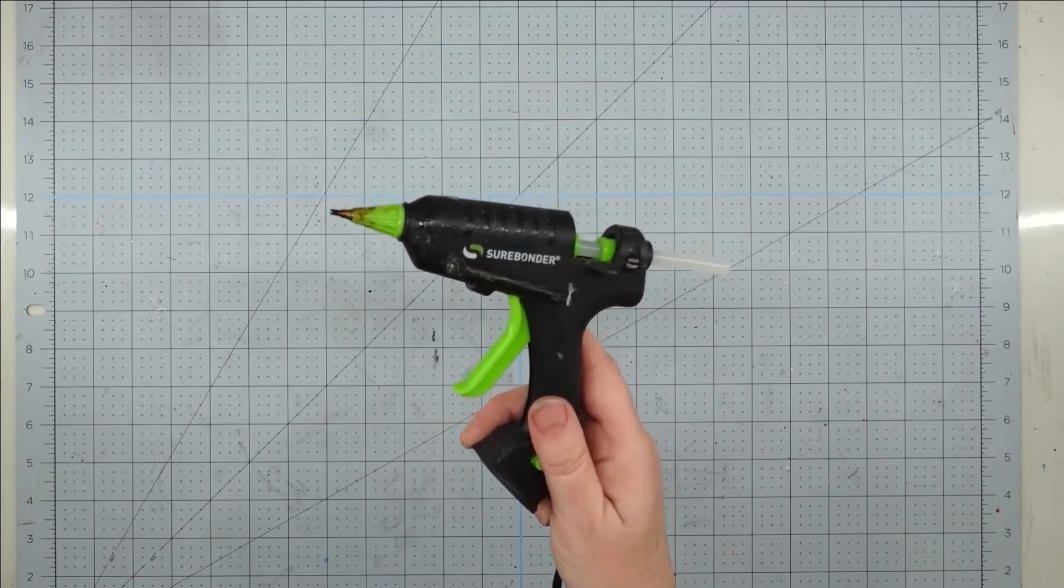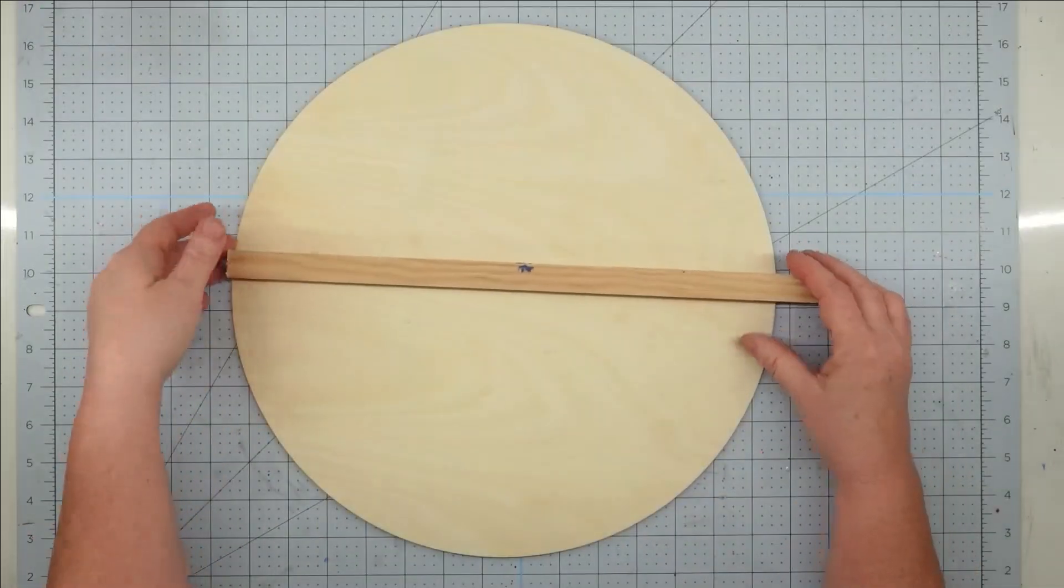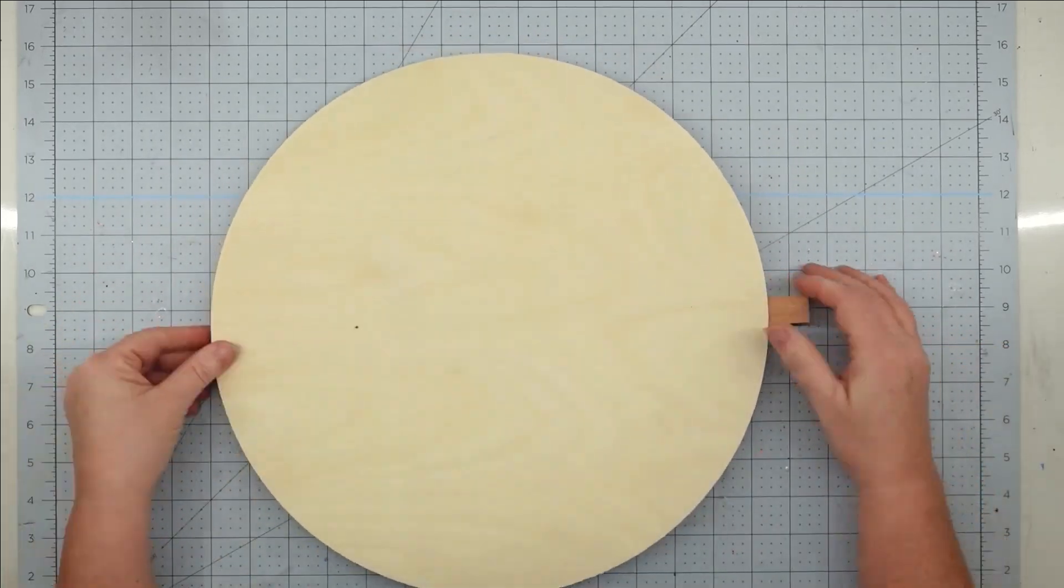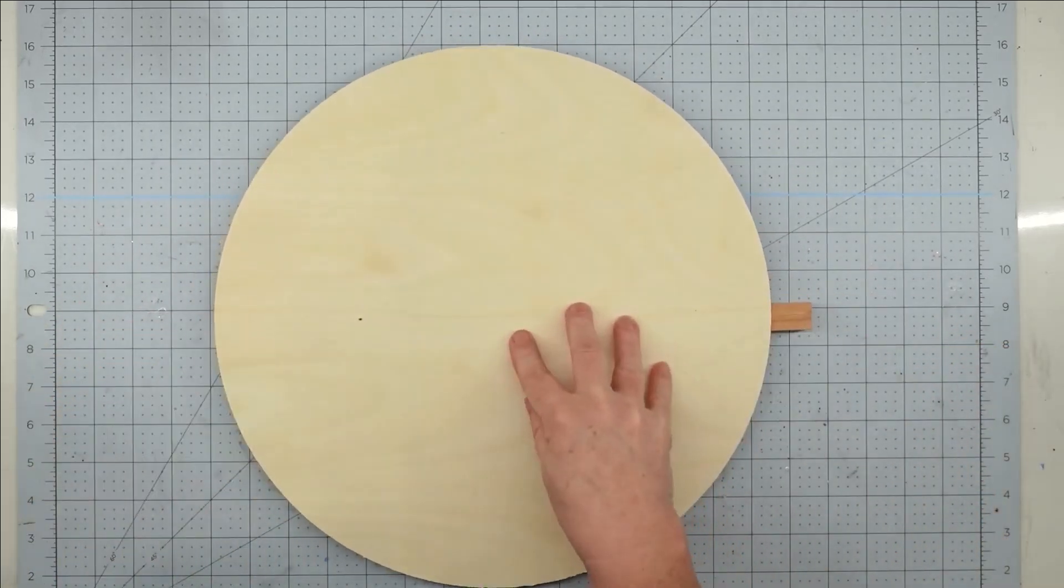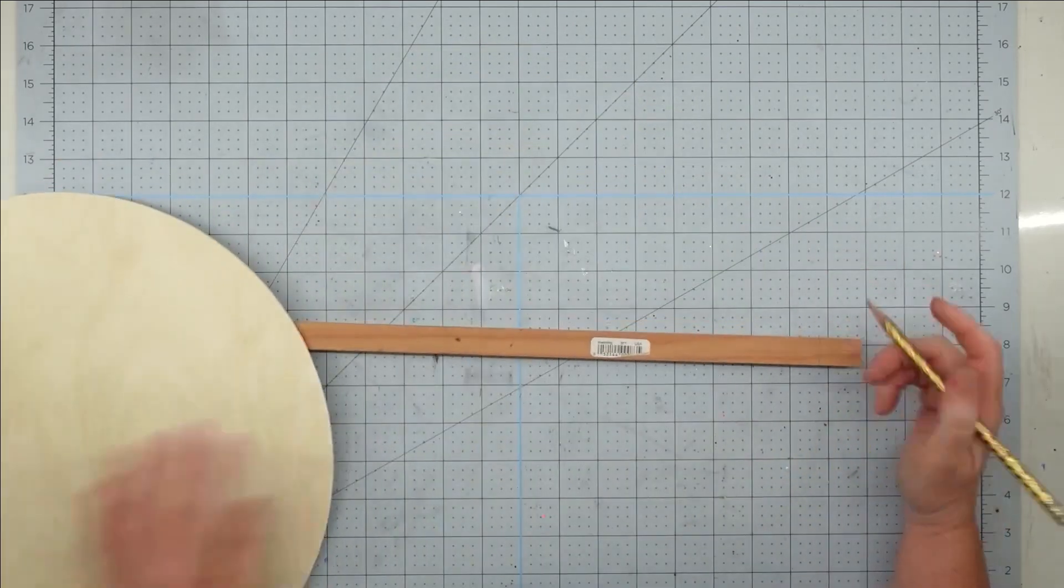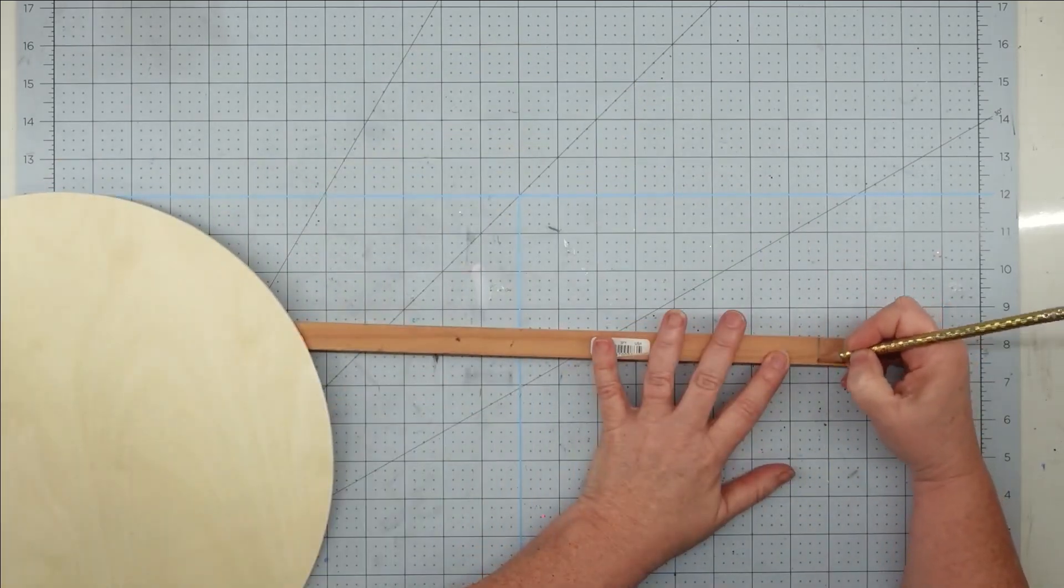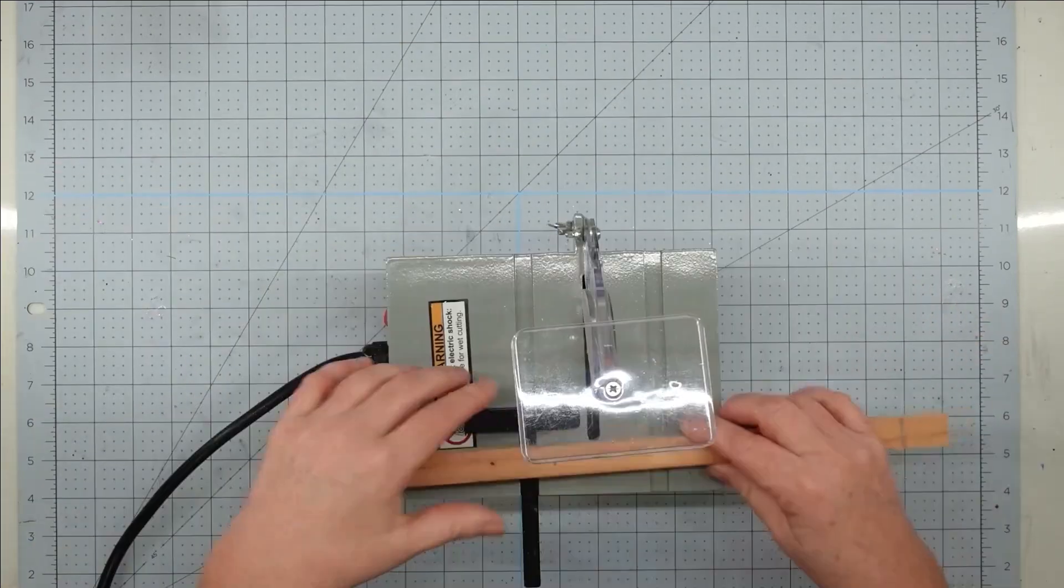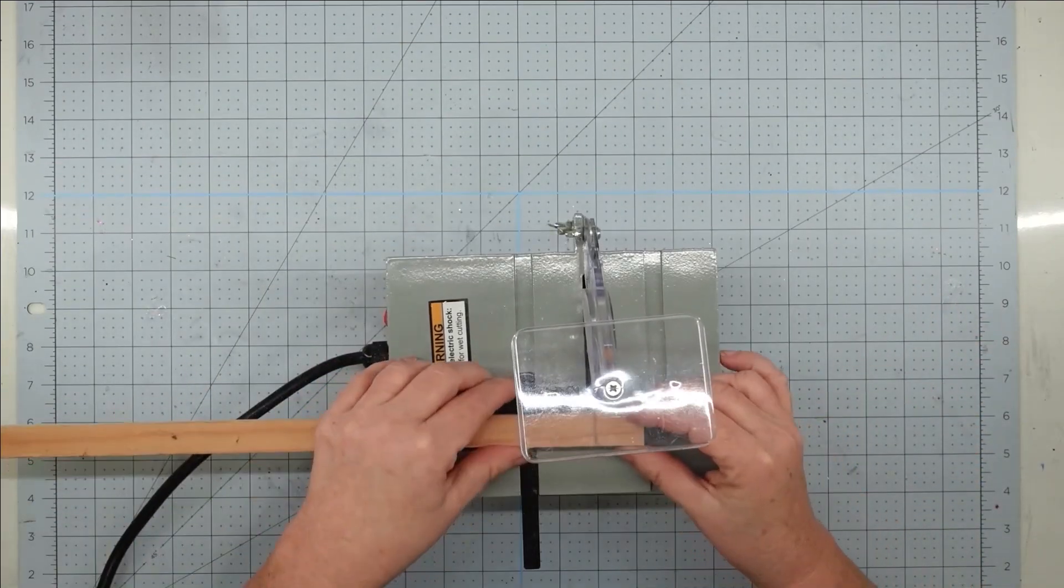Now this project is a wood round for Christmas, and this one is not going to have any wording on it, so you don't have to worry about Cricut letters or stick-on letters. This one's going to be simple.